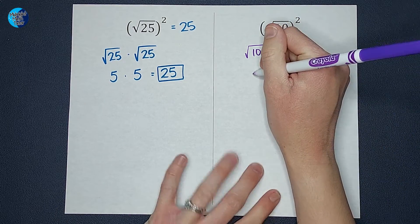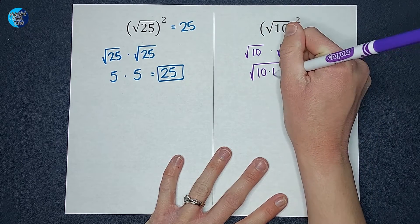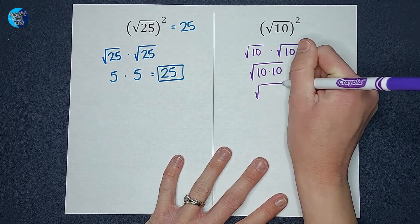But so I do 10 times 10, they're both under the radical so I can write it as 10 times 10 under there, which would end up being 100.